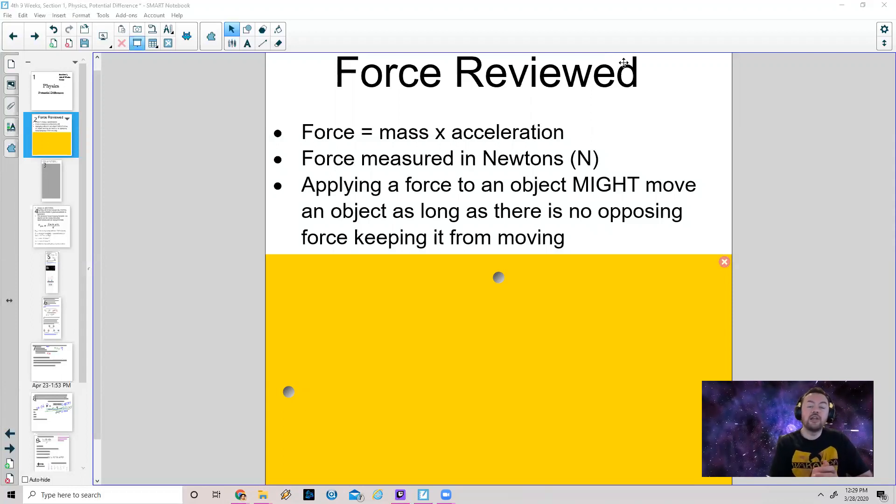For example, the earth it took around 480 newtons to move the box. On the moon it would take less. Why is there going to be less force? Well because there's less gravity on the moon and that's what we're going to cover today is we're going to cover gravity.